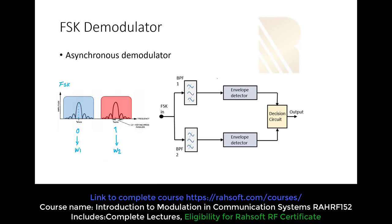Let's see what is happening in the demodulator system. In this system, we are going to have two bandpass filters and two envelope detectors, and at the output we have a decision circuit. We will study two cases one by one to see how we can detect the FSK signal. For the first case, we imagine that we have a zero, so when we have a zero it means we have a certain signal at the input.